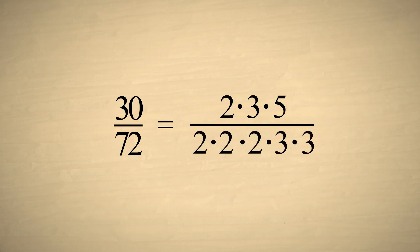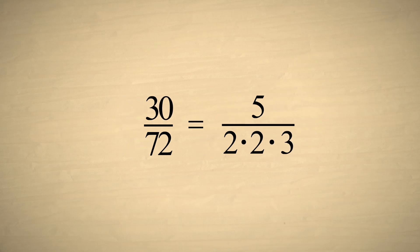However, since the top has only one two and one three, we can only cancel out a single factor of two and a single factor of three, which leaves us with five-twelfths.